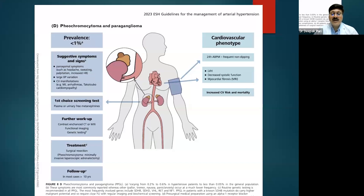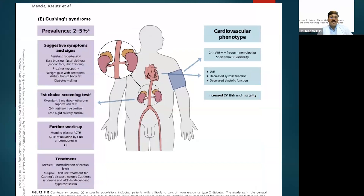In Cushing syndrome, the patient may have resistant hypertension, moon face, skin thickening, gross centripetal weight gain, and diabetes. Screening includes a dexamethasone suppression test and 24-hour urinary cortisol levels. Both medical and surgical treatment may be required.